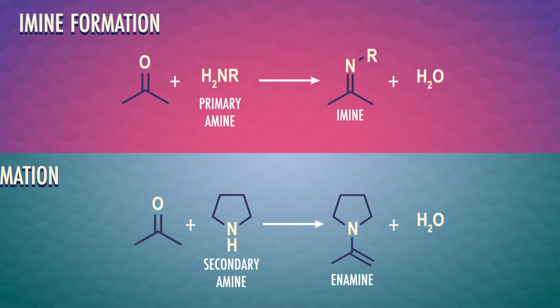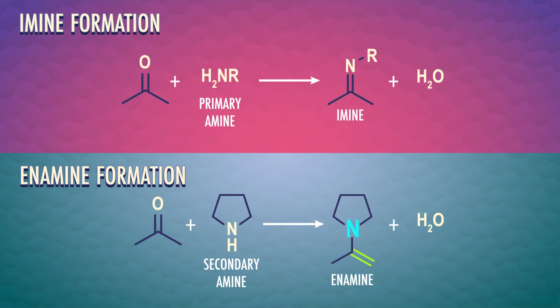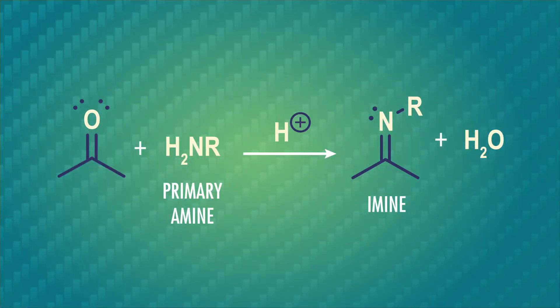Imines are molecules with carbon-nitrogen double bonds, and enamines contain a carbon-carbon double bond next to an amine, an alkene plus an amine. Imines come from a carbonyl and a primary amine, while enamines come from secondary amines. One way to remember the difference is to notice that the words imine and amine are the same except for one letter, so imines come from primary amines. Enamine, on the other hand, has two extra letters, so enamines come from secondary amines.